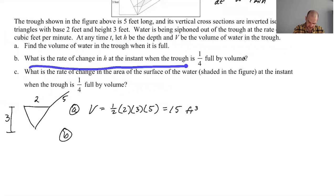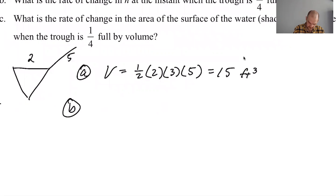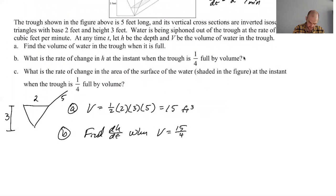All right, what is the rate of change of h at the instant when the trough is one quarter full by volume? So we're finding dh/dt when the volume is a quarter of its max, so 15 over four.